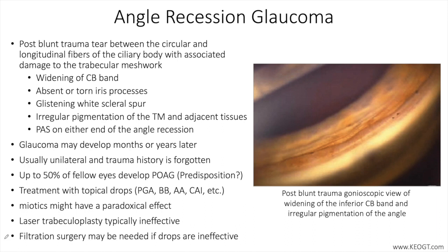A peaked pupil may indicate eyewall damage that is subtle, and hypotony may indicate ciliary body shutdown due to inflammation or retinal detachment that requires immediate attention.